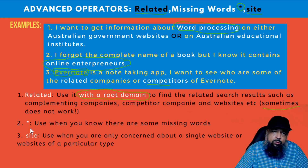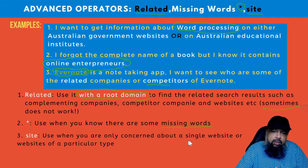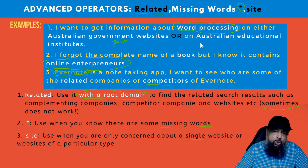The next is the asterisk. This works just like a wildcard character, which you can use anywhere you think some words are missing. You just put an asterisk and Google will understand that there might be other words in that location. The site operator, which we've discussed in another video, is used when you are concerned only about a single website or websites of a particular type — for example, all Australian government websites have '.gov.au' and all Australian educational institutes have '.edu.au' domains.